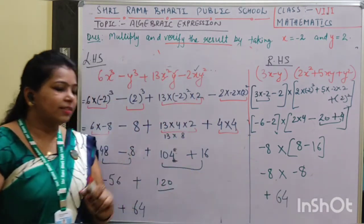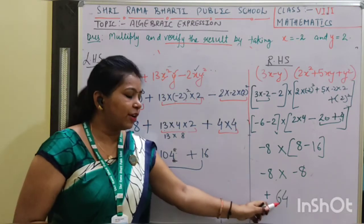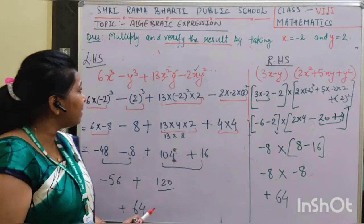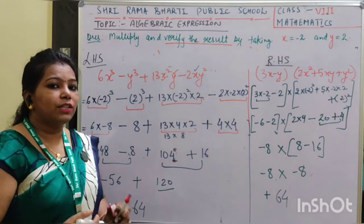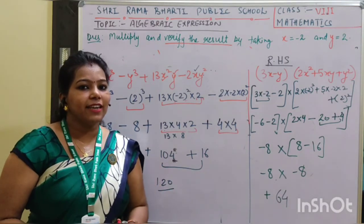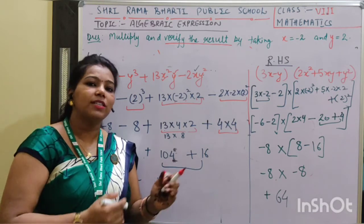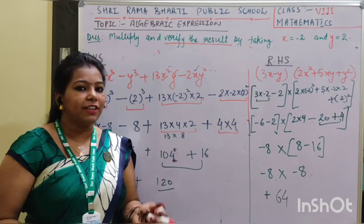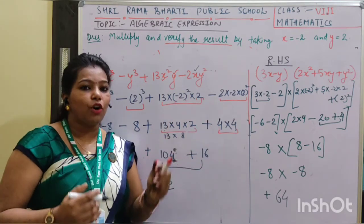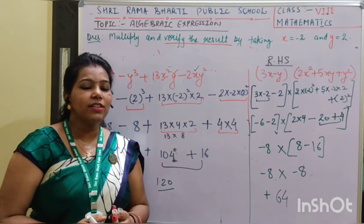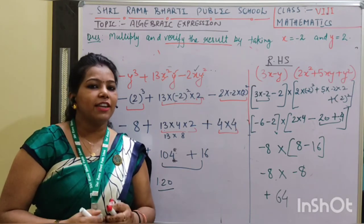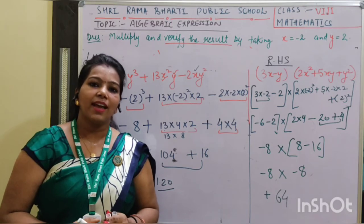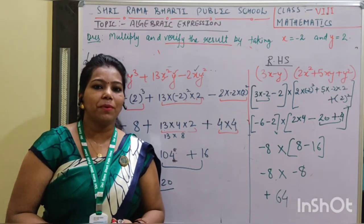Here children you can notice that on the RHS we also got positive 64, and my LHS was also positive 64. So it is verified that LHS equals RHS. Therefore the result is verified — we followed the correct procedure. This is the way we can verify the result of the given multiplication. I hope children you understood this. Thank you so much.